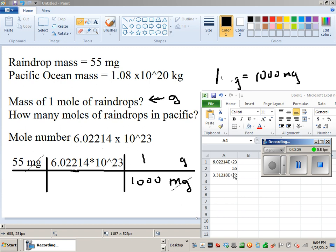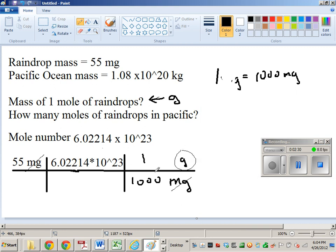So right now this is in grams, and we want to get this in kilograms. So how do we get from grams to kilograms? We're going to do kilogram to grams, so it's going to be 10 to the 3rd over 1, 10 to the 3rd kilos to 1 gram.